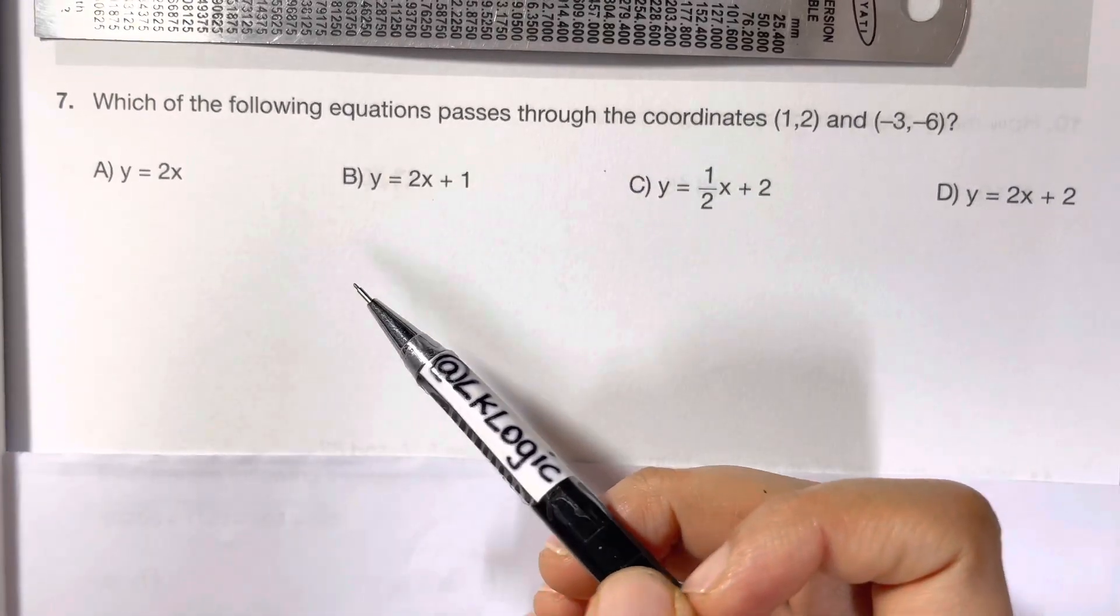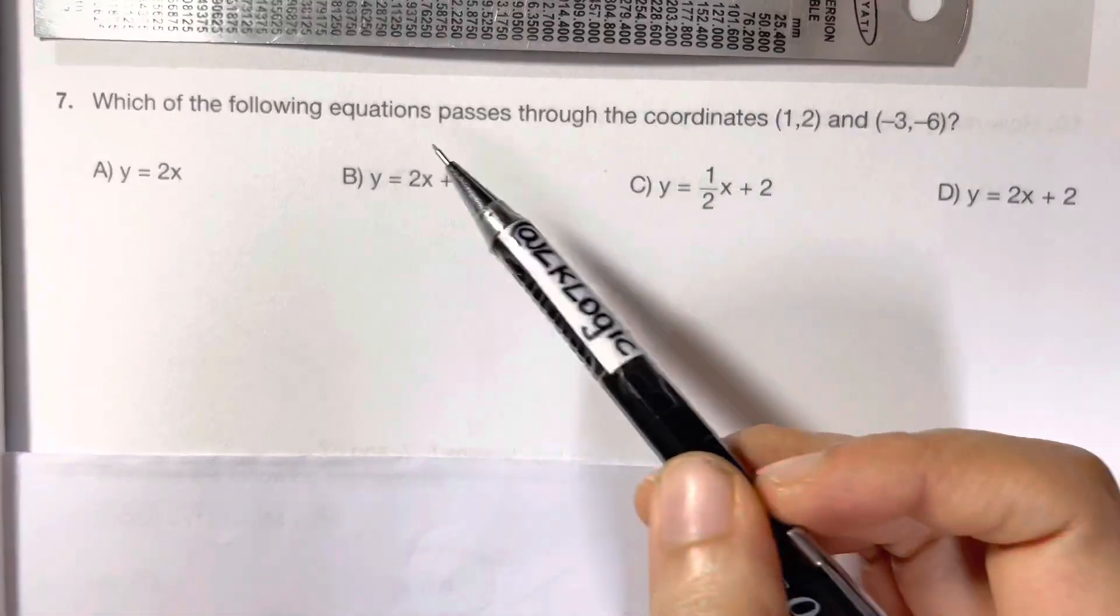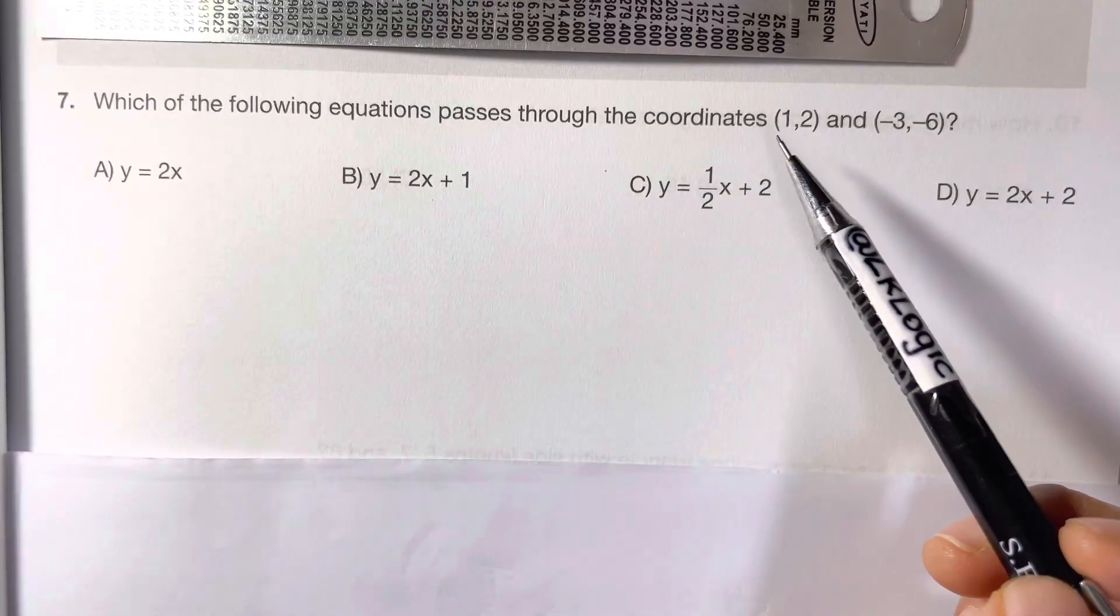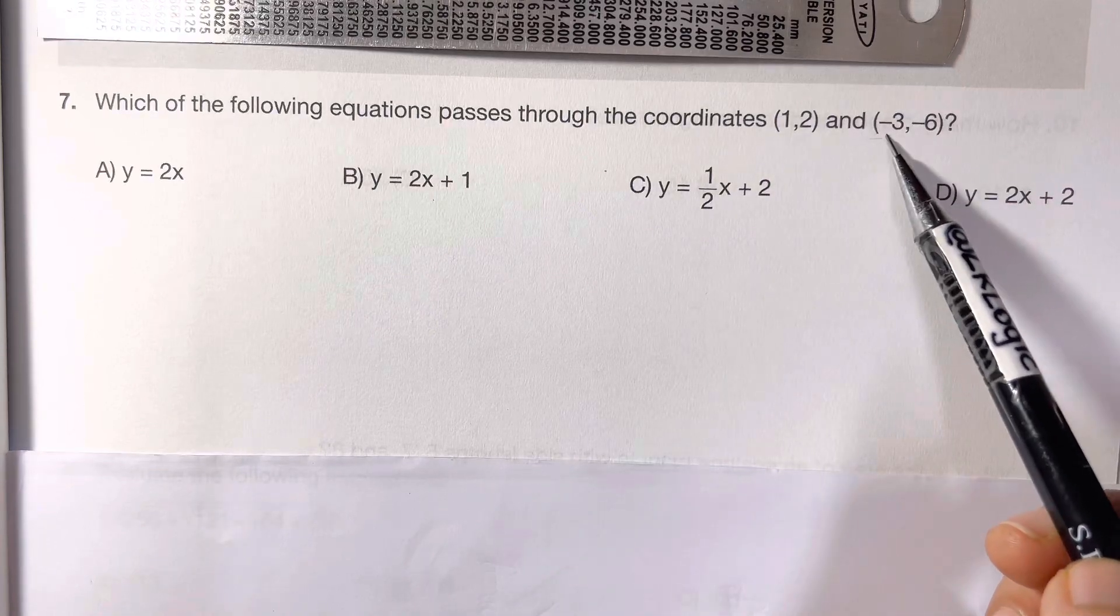Hi everyone, in this math olympiad question we are going to solve this question which says which of the following equations passes through the coordinates (1,2) and (-3,-6).